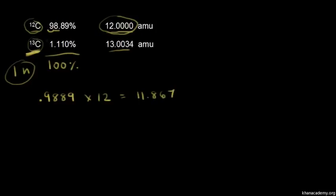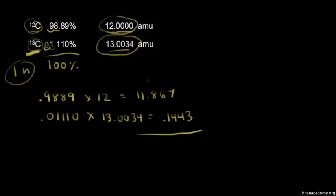We'll do the same thing for carbon-13. So we need to move the decimal place too. So we move it one and two. So we'd have .01 there. So .01110 times this number. 13.0034 is .1443. So we add those two numbers together.